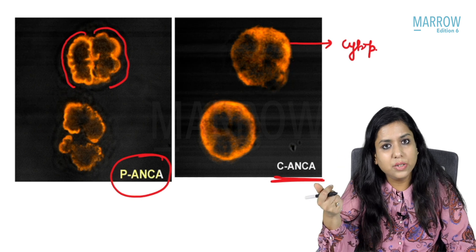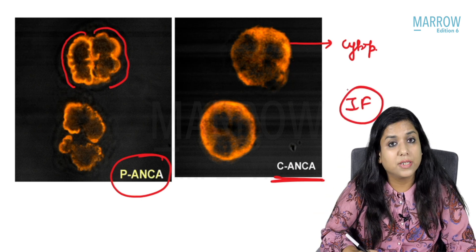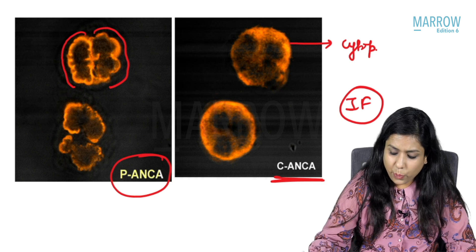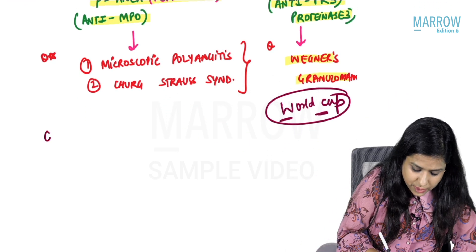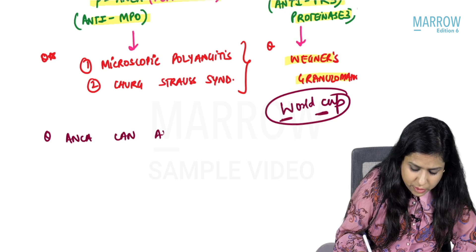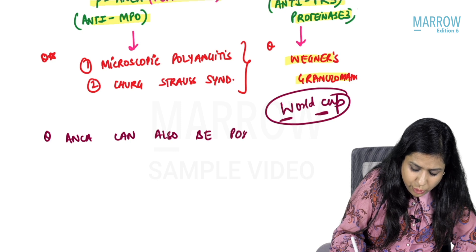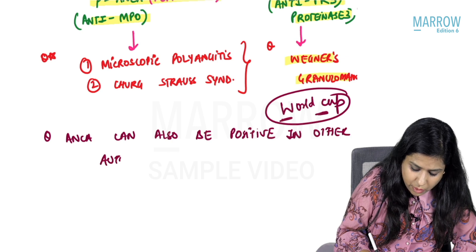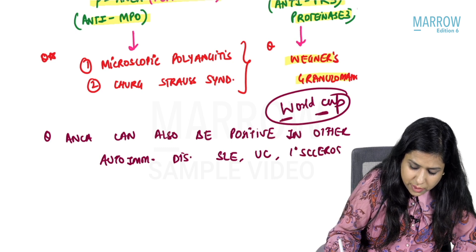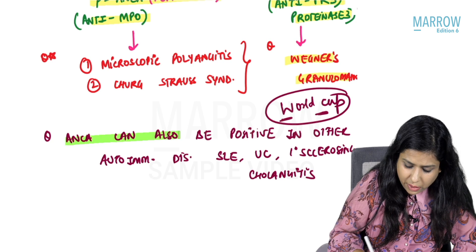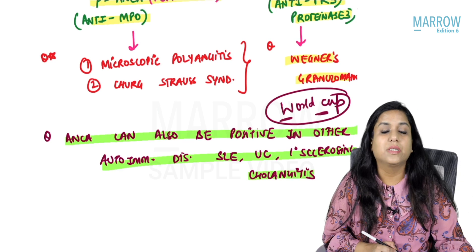Is ANCA very specific? No. ANCA can also be positive in other autoimmune disorders like SLE, ulcerative colitis, or primary sclerosing cholangitis. So positivity of ANCA is not exclusive to vasculitis.